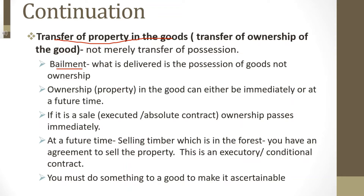Ownership in a property may pass immediately or at a future time. Contracts where ownership passes immediately are called executed or absolute contracts. For example, if you need a laptop, walk into a shop, agree on the price, pay for it, and it is handed over to you — you become the owner of that laptop immediately.